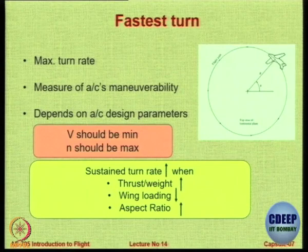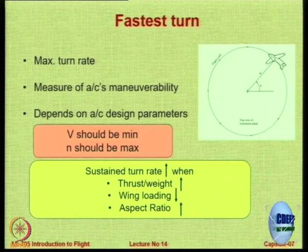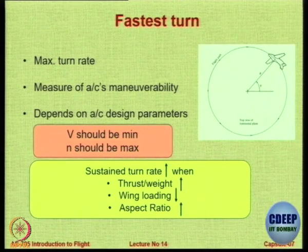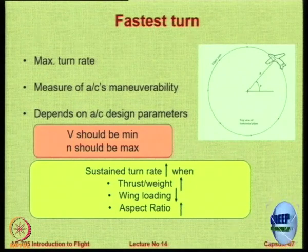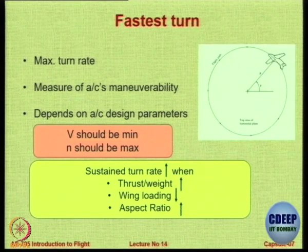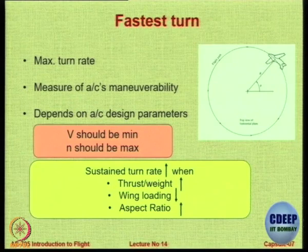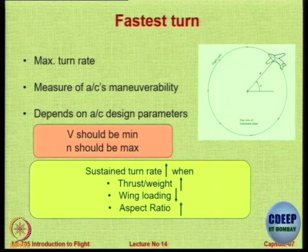There are two types of turns: a sustained turn and an instantaneous turn. The main difference is whether your operating conditions remain the same or you are allowed to change them. In an instantaneous turn, you are flying at some speed and altitude, and during the turn you do not mind if your altitude reduces or speed reduces. This is governed only by aerodynamic parameters because you are allowing the aircraft to reduce in speed and altitude.